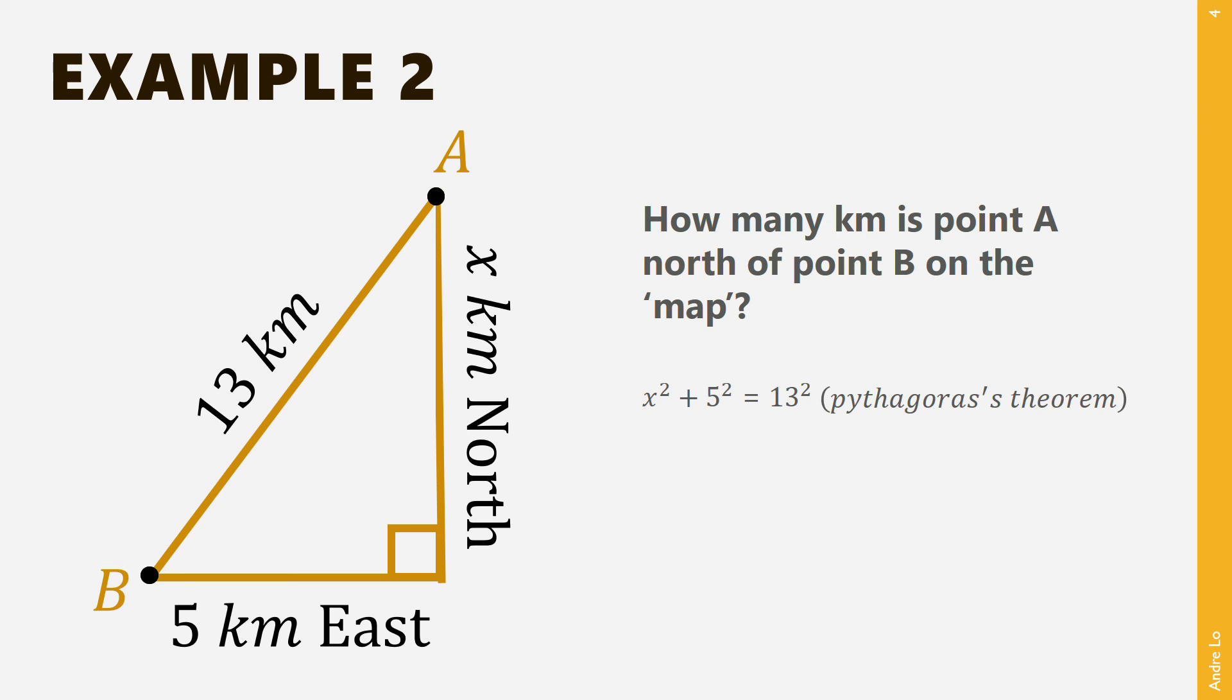Solving this, we find that x squared equals 144. Since x is the distance, we can say that x equals 12km, as x must be a positive number. Thus, we can therefore say that point A is 12km north of point B.